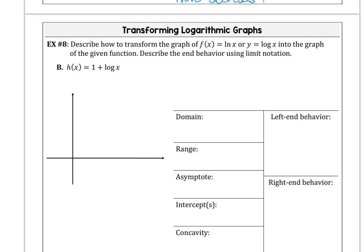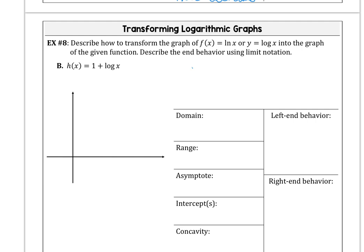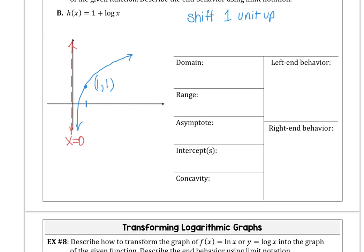In part b, our function is going to have a translation one unit up. So instead of being at 1,0, our point moves to 1,1 for that translation. Still has a vertical asymptote at 0. That didn't change. So x equals 0. And if we want to find the x-intercept, then we would solve the equation.